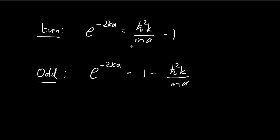Our goal now is to solve these two equations. If we can find the value of k such that the even-function equation is satisfied, we would have found the energy levels possible for that case, and the same for the odd case. k is related to the energy levels by a specific equation, so solving for k allows us to deduce E, and finding E gives us the allowed energy levels for the double Dirac delta potential.